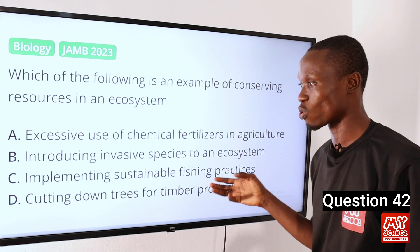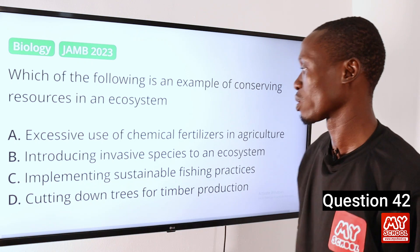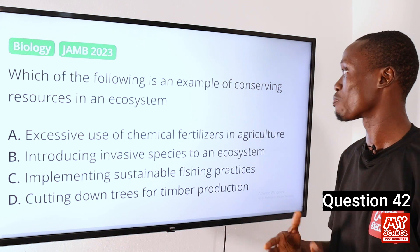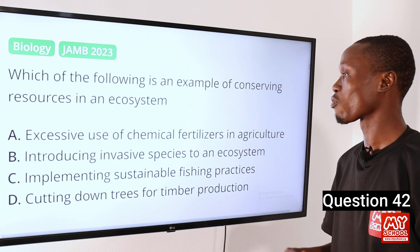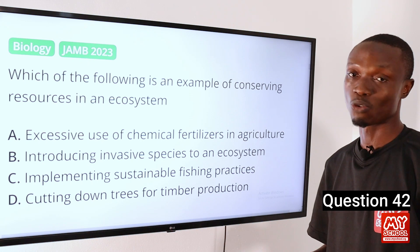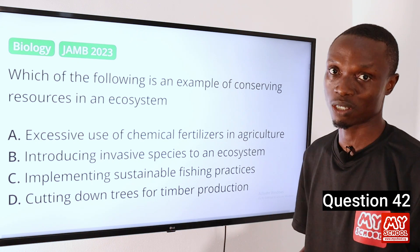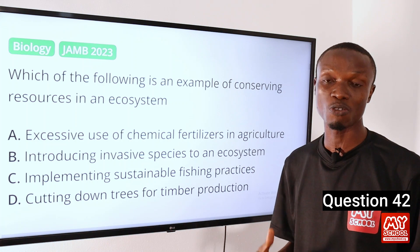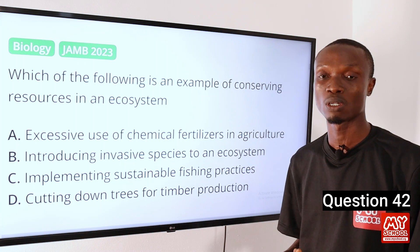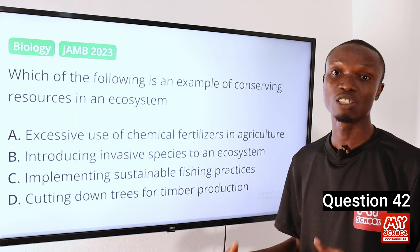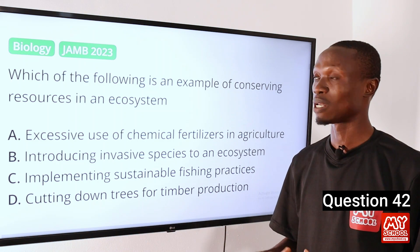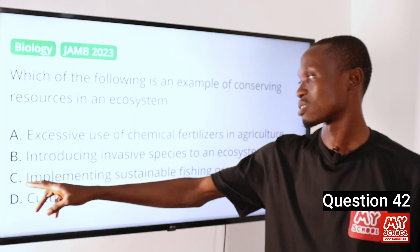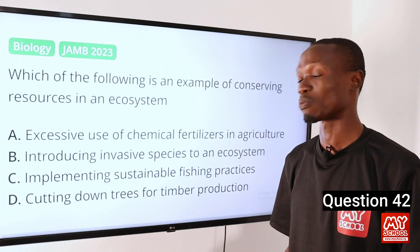The answer to this question is option C. Implementing sustainable fishing practices is an example of conserving resources in an ecosystem. This identifies a practice that helps in preserving fish populations and maintaining the health of the aquatic ecosystem. So that makes option C the correct option.